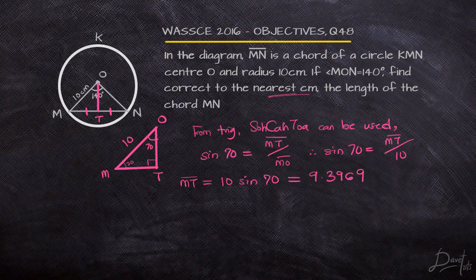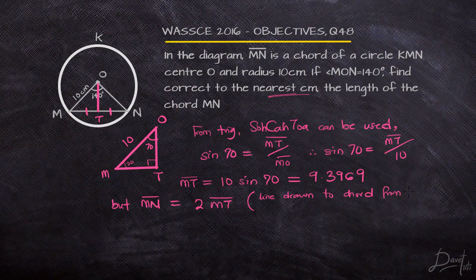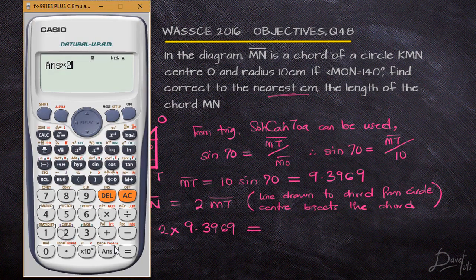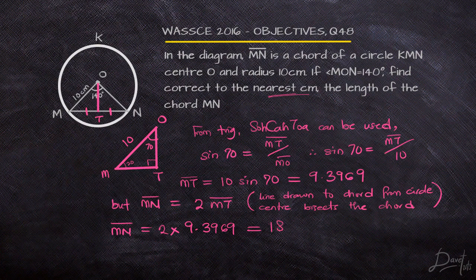We should note that we are asked to find the answer correct to the nearest centimeter. Nobody introduced T for us — we introduced T ourselves. From the properties of a circle, a line drawn from the center perpendicular to a chord bisects the chord. So MT is half of MN, meaning MN equals twice MT — that is 18.7938, which to the nearest centimeter is approximately 19 centimeters.